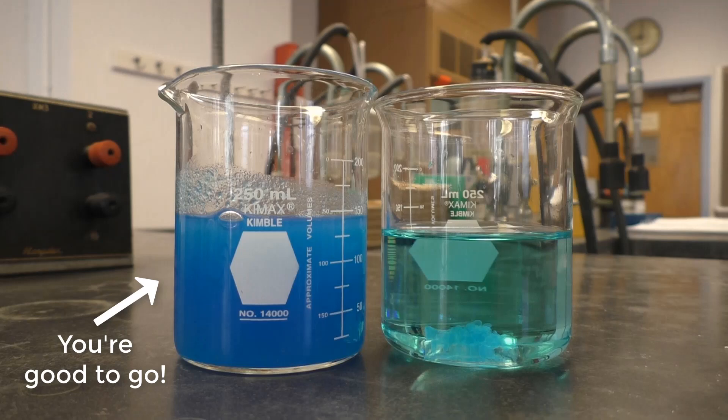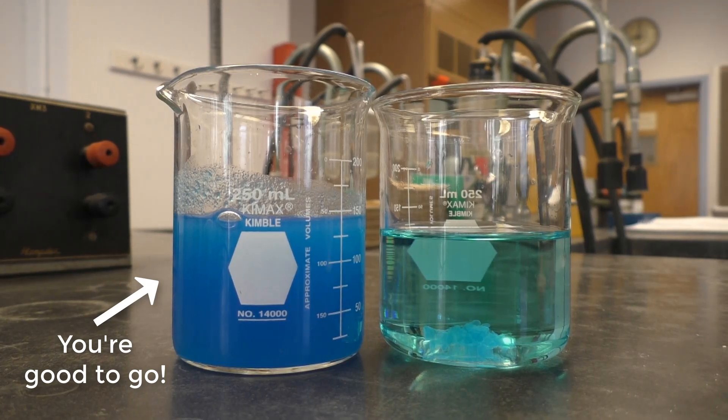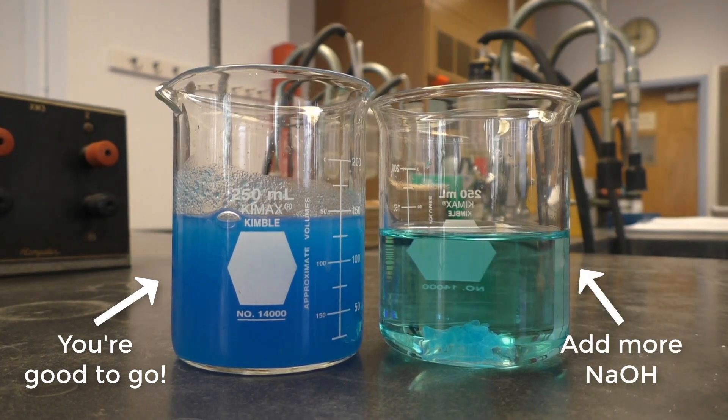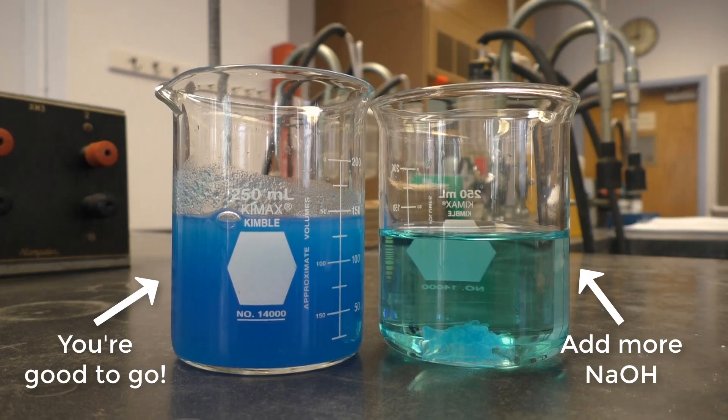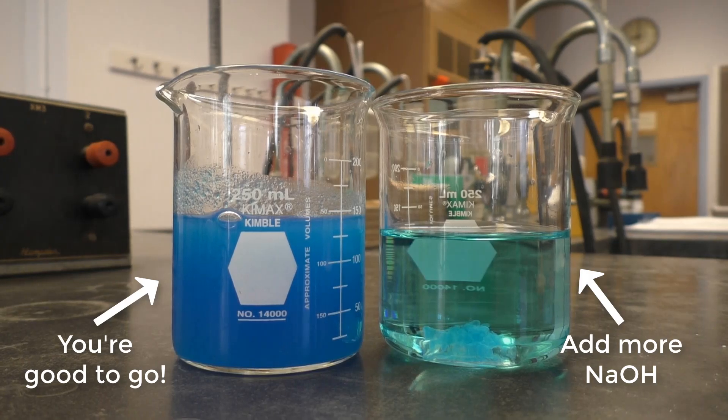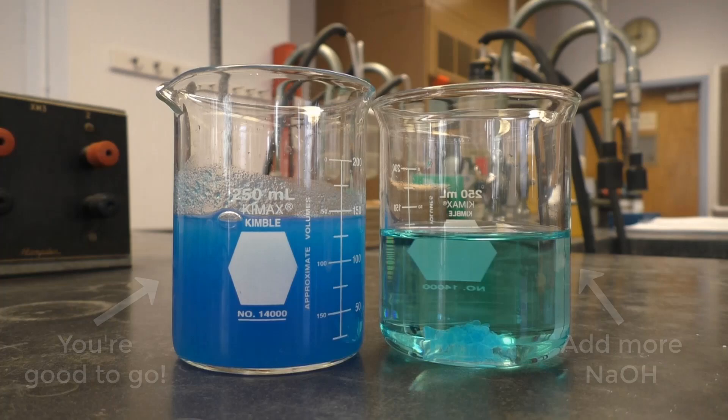If instead of a deep royal blue opaque solution, you get a more translucent teal or baby blue color, don't panic. All you have to do is add more NaOH in 10 milliliter increments until you get the desired product.